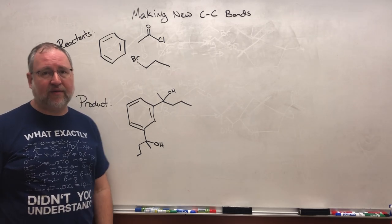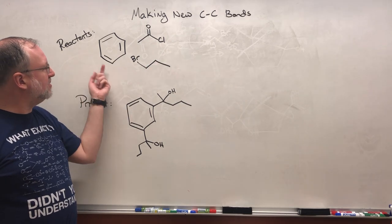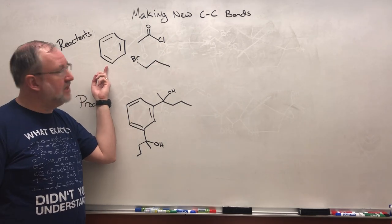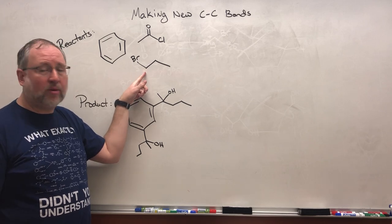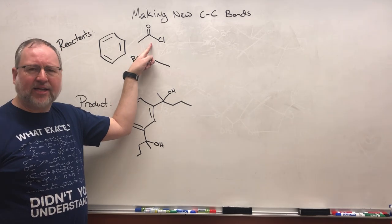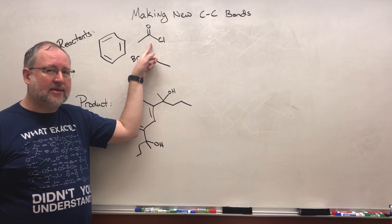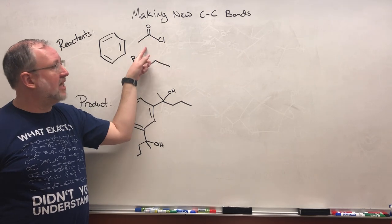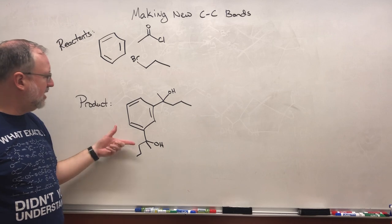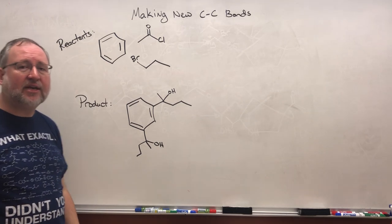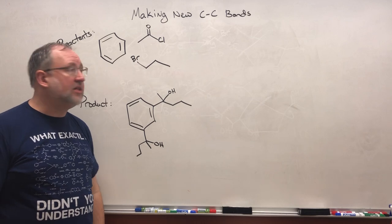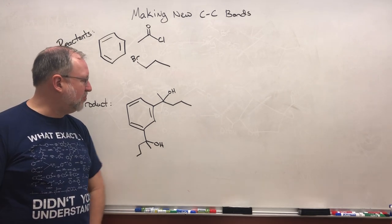So here you have your reactants. We got ourselves some benzene, we got ourselves some bromopropane, one bromopropane. And then that, do you remember what that is? That is an acyl halide, something that's a little bit unusual. And here is the product that we're making. So I want you to take a few minutes, study the reactants, study the products.